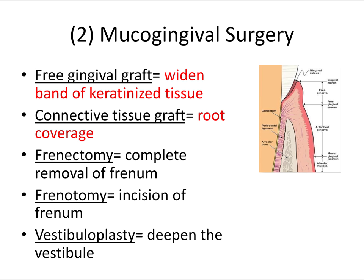The second category is mucogingival surgery — now we're including both the gingiva and the mucosa, all soft tissue above and below the mucogingival junction. Knowing the free gingival graft and the connective tissue graft is going to get you so many board exam questions. These are the two main types of soft tissue grafts, so commit this to memory.